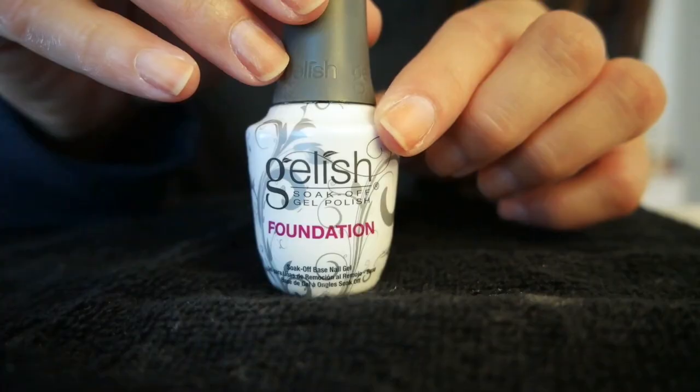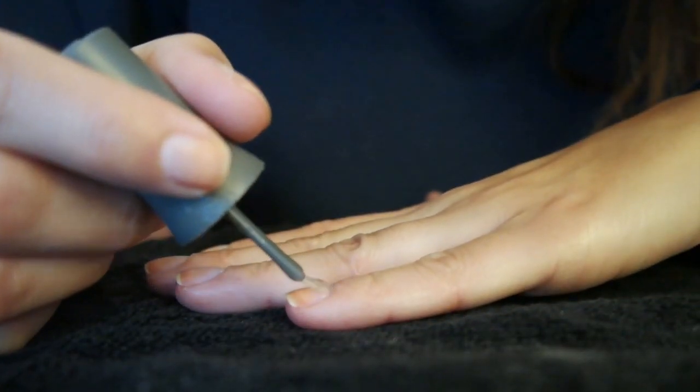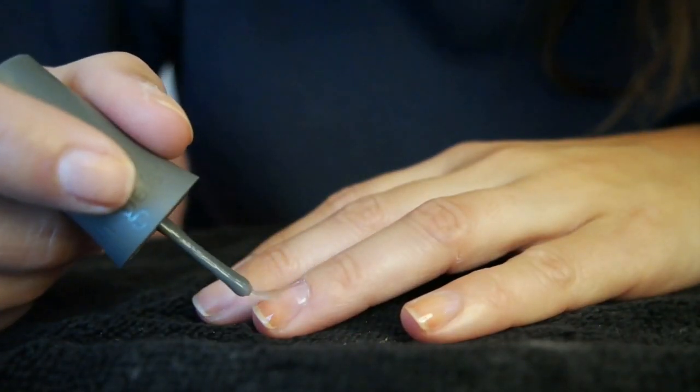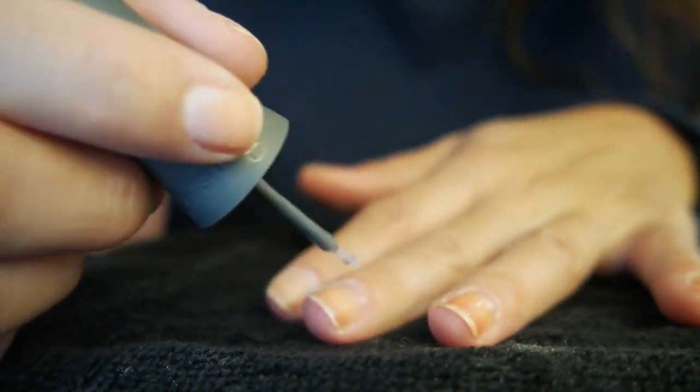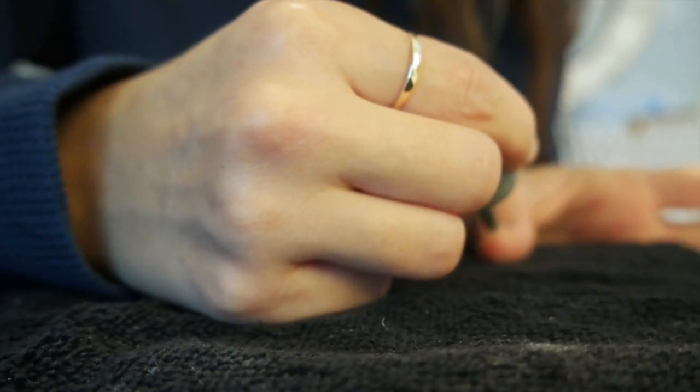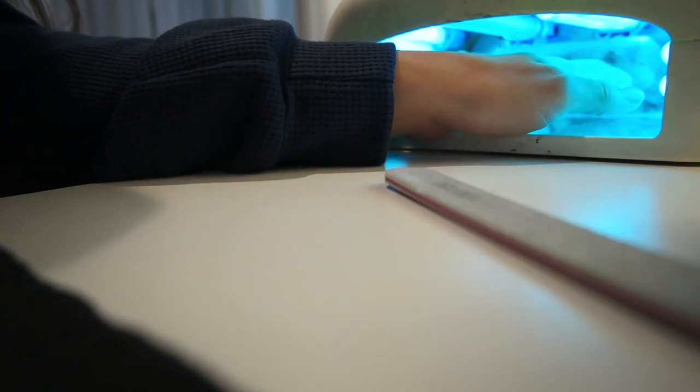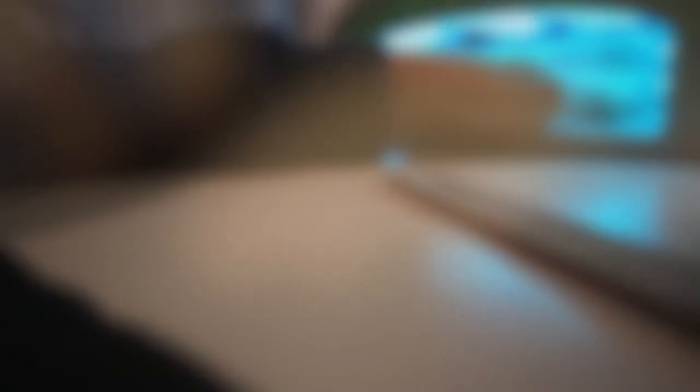Once that's all set, we're going to grab our foundation. Per usual, I am using Gelish products. They are my all-time favorite when it comes to gel manicures, and I'm going to paint a thin coat of foundation on all of my nails. Once that's set, we're going to pop it into the UV lamp and cure it for a couple minutes.